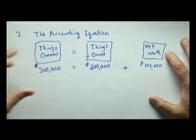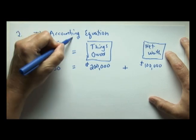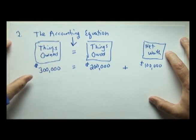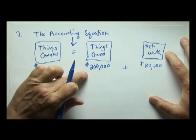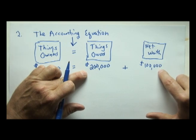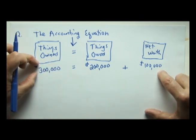The name of this lesson is the accounting equation, meaning something on the left, things owned, must always equal the sum of debts owed, and when added to the net worth, will give you the total value.